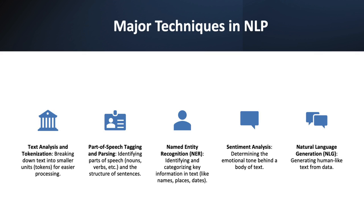Natural Language Generation, NLG, is the process of generating coherent, human-like text from structured data. NLG systems can transform data into narrative text, generating summaries, reports, explanations, or other forms of written content that are indistinguishable from text written by humans. This technology is used in a variety of applications such as automated report generation, content creation for chatbots, and personalized communication and customer service.